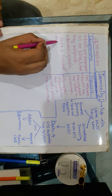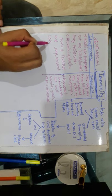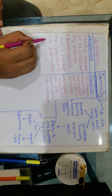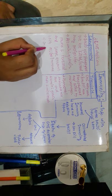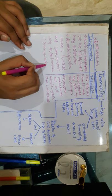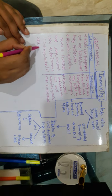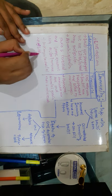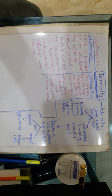In lepromatous leprosy, the albumin-to-globulin ratio is reversed, and large amounts of both autoimmune and anti-microbacterial antibodies are produced.